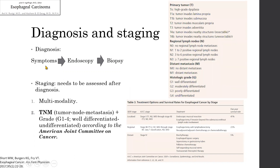Diagnosis follows suggestive symptoms, which indicate an upper endoscopy, and a biopsy is done to confirm the diagnosis. Staging is required after diagnosis and is multimodal, following the TNM staging criteria designed by the American Joint Committee on Cancer: T for tumor depth of invasion, N for regional lymph node involvement, and M for distant metastasis. The grade of the tumor, reflecting the level of differentiation, is also assessed.